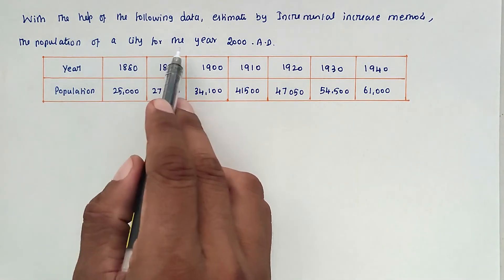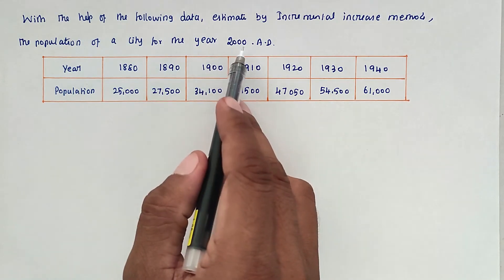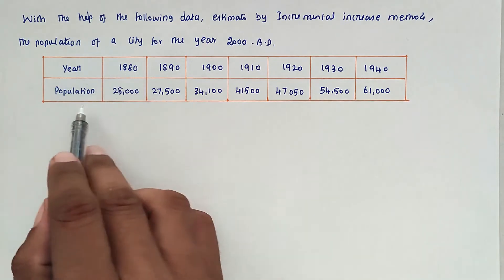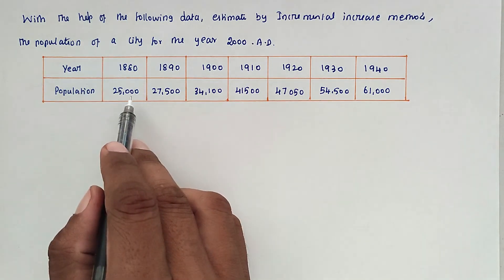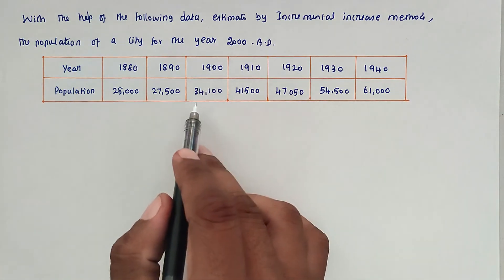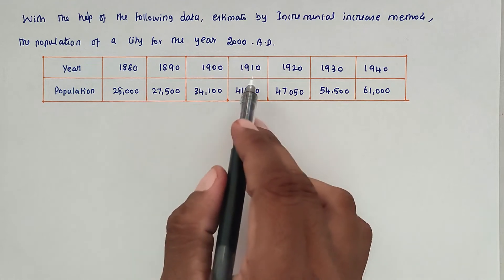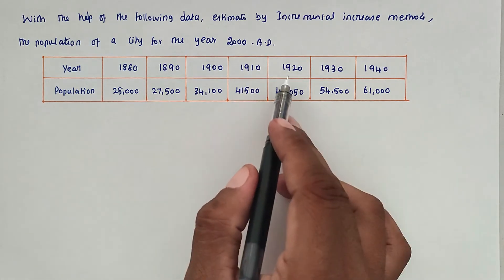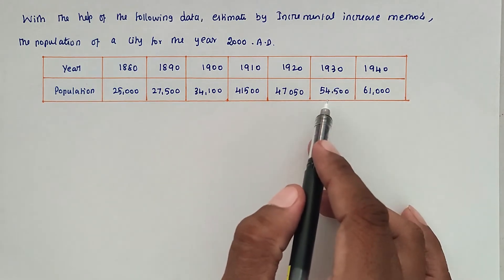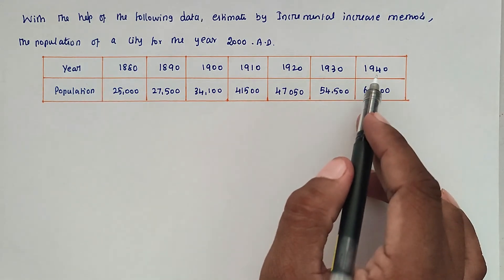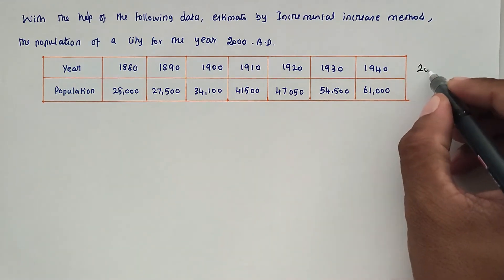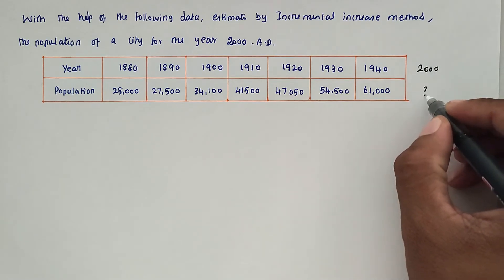The given data is: Year 1880 — population 25,000; 1890 — 27,500; 1900 — 34,100; 1910 — 41,500; 1920 — 47,050; 1930 — 54,500; 1940 — 61,000. We have to find the population for the year 2000.